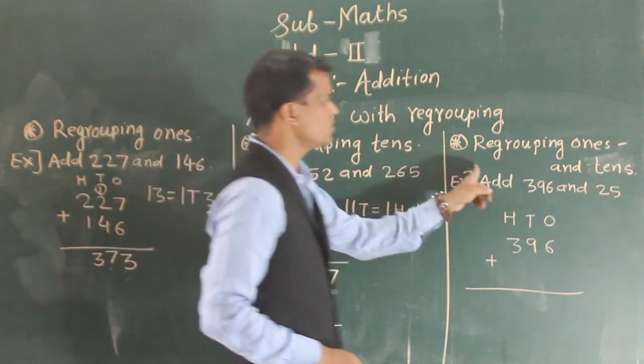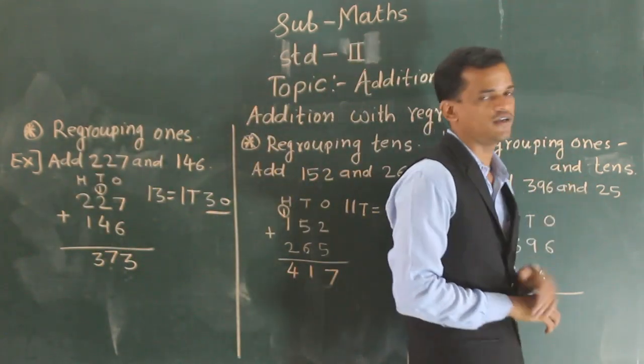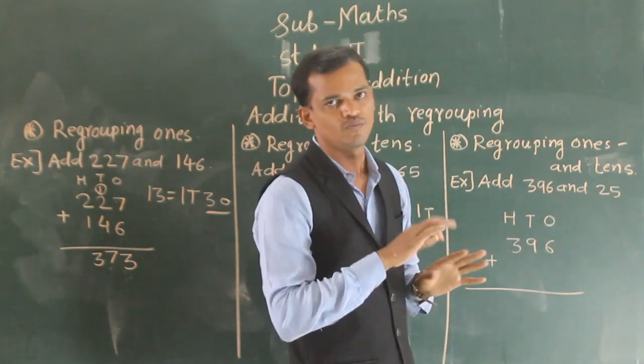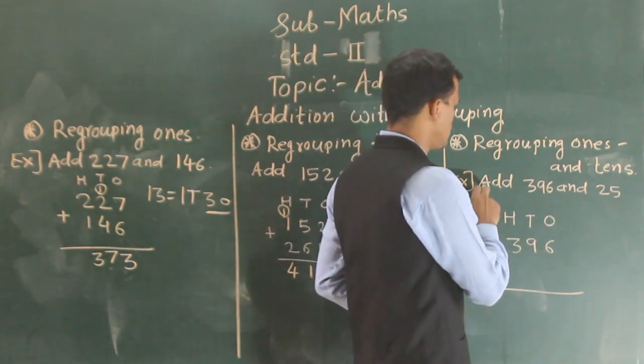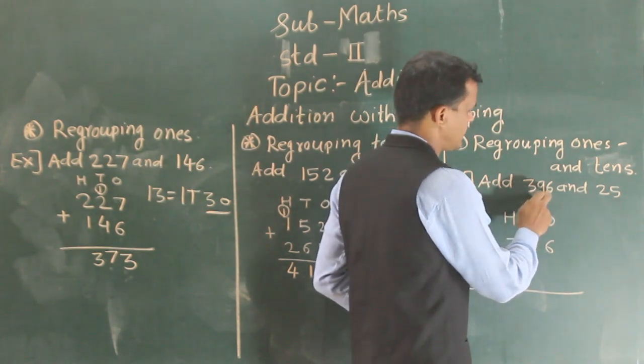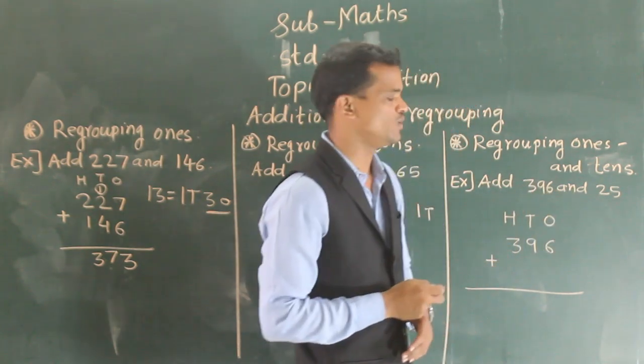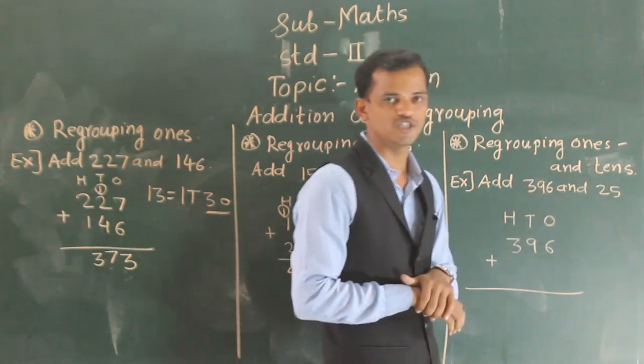regroup the ones and tens. Here we have to regroup both columns, ones and tens. See the example, add 396 and 25. So this is 3 digit number, this is 2 digit number.